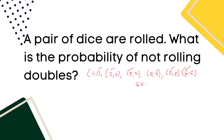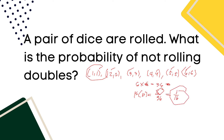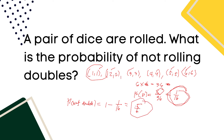The total sample space for two dice is 36. The probability of rolling doubles is 6 over 36, which simplifies to 1/6. Since the question asks for the probability of not rolling doubles, the probability of not doubles is equal to 1 minus 1/6, which equals 5/6. That is the answer for example number 3.